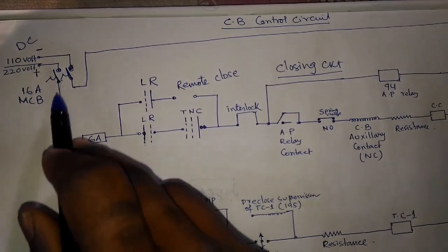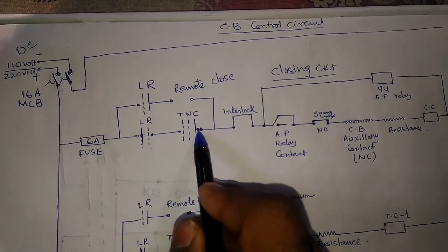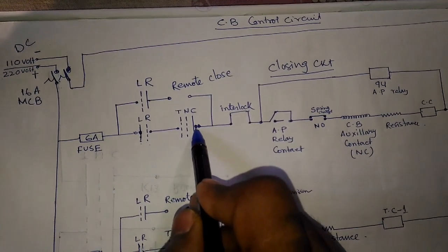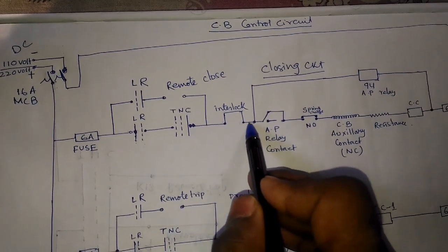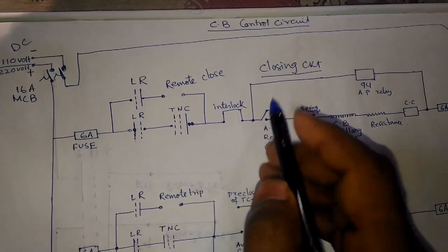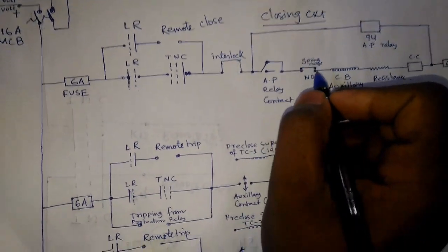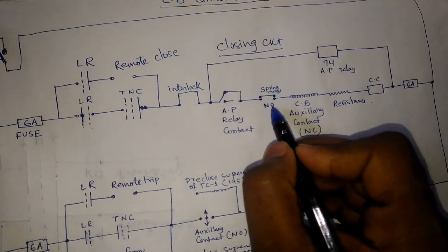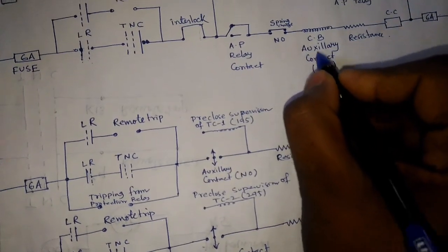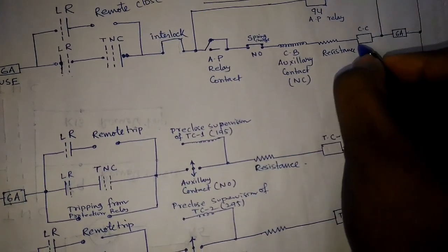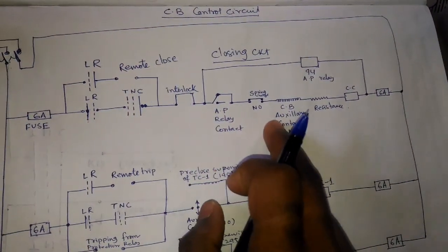The positive DC voltage is coming through the fuse and the LR switch, and we are operating the closing command. The voltage passes through the interlock, then through the anti-pumping relay NC contact. If the circuit breaker spring is already charged, the power passes through this NC contact, then through the circuit breaker auxiliary contact — also NC — then through the resistance and the closing coil, completing the circuit through the negative terminal. So the closing command is provided to the circuit breaker.